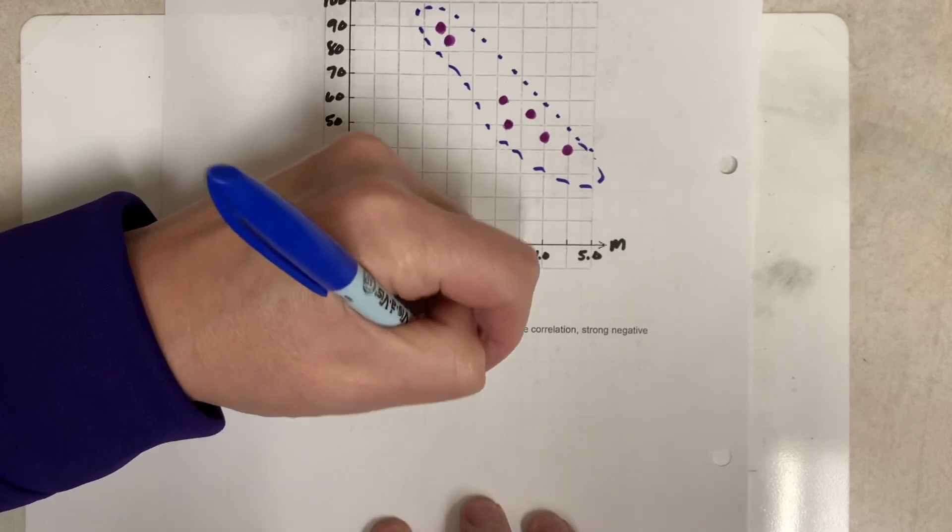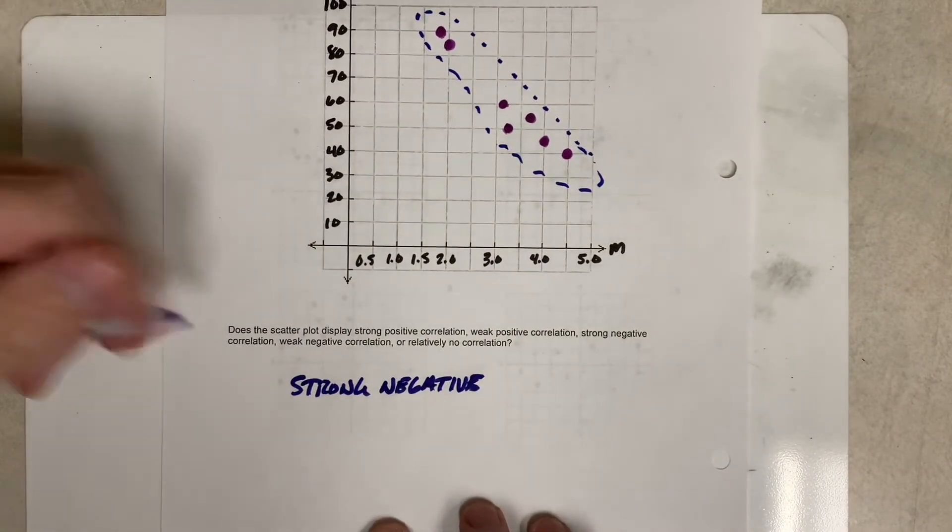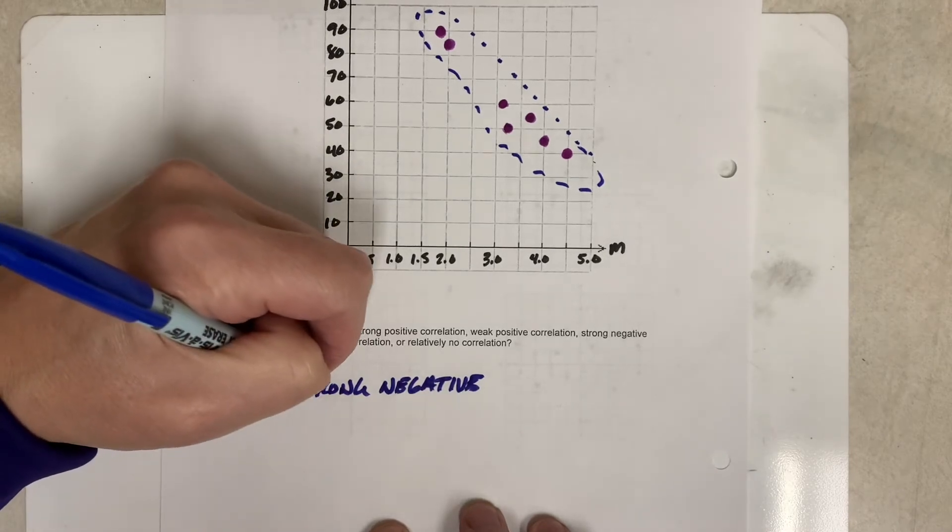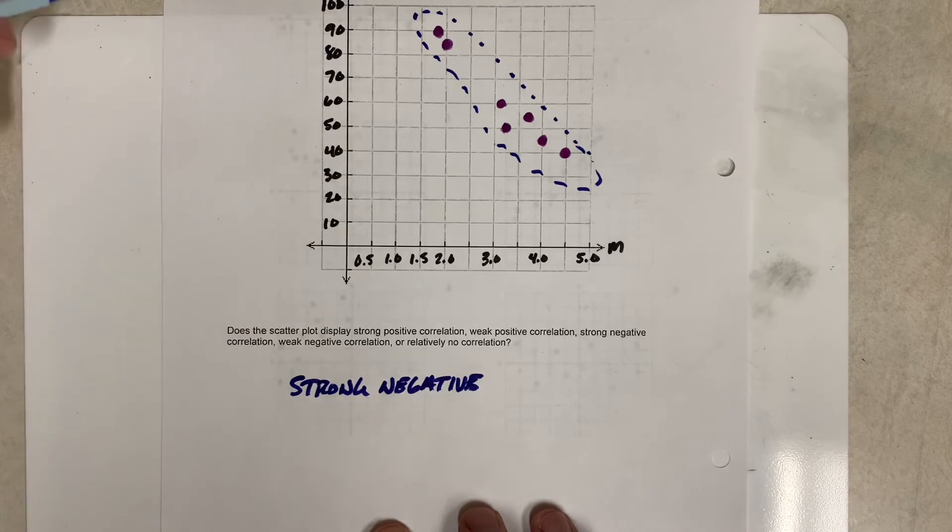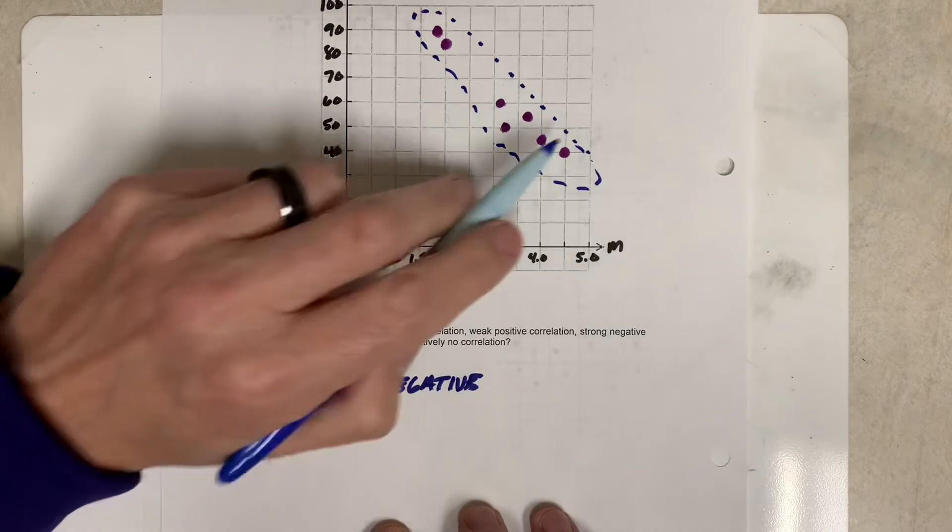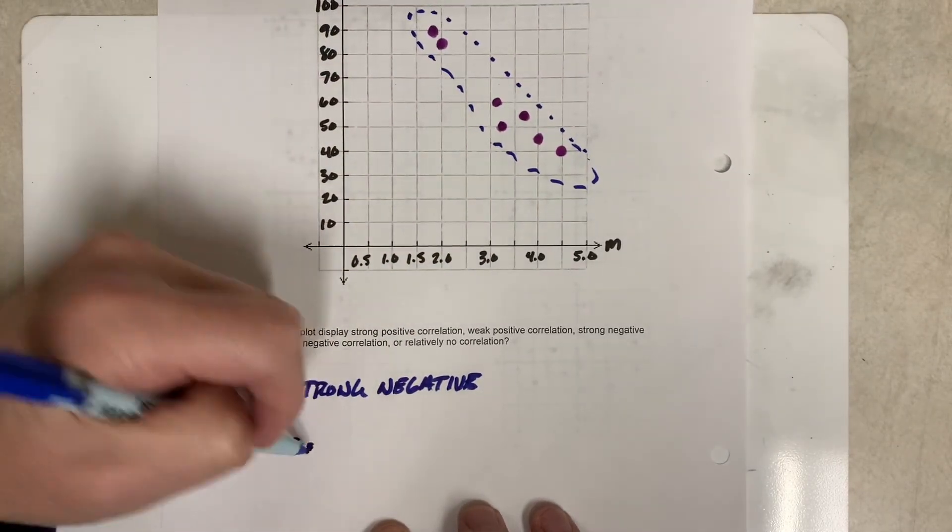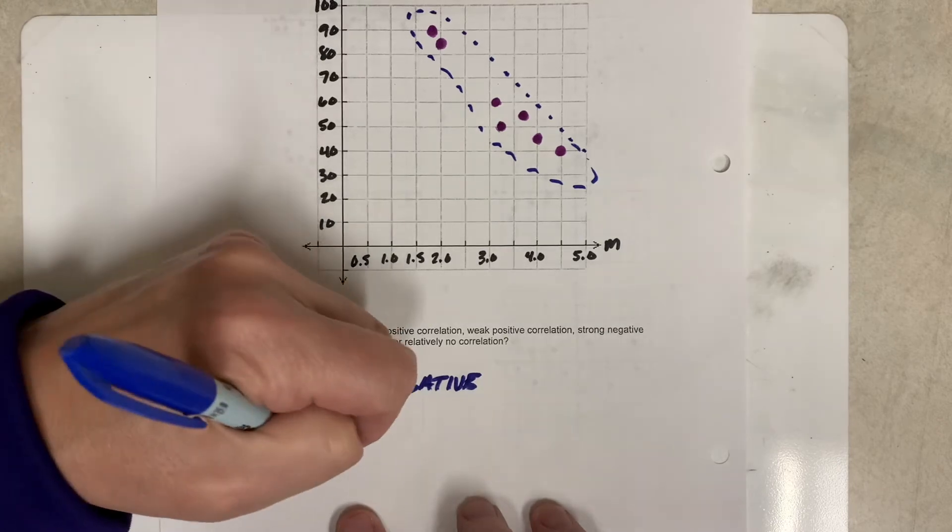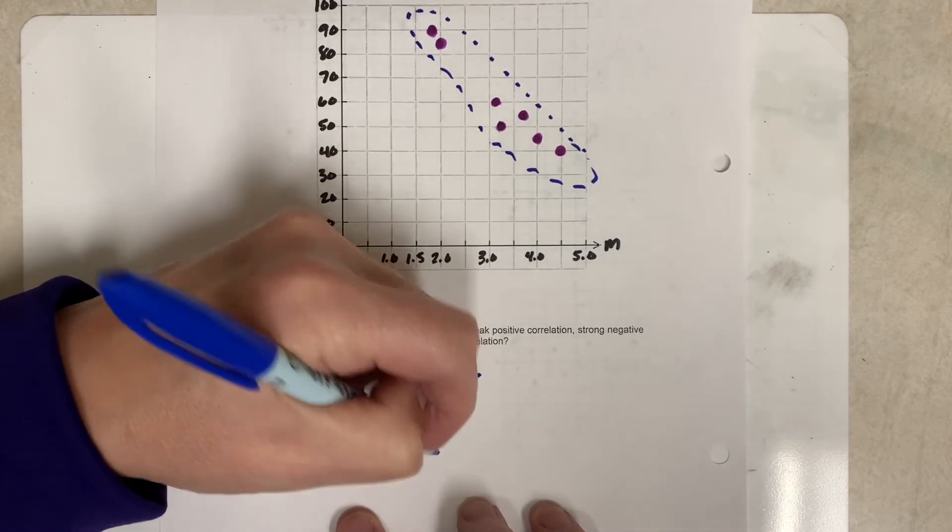Okay, so how do I know it's strong negative but without just looking at it? Well, sooner or later, you guys are going to do things like lines of best fit using technology. If you look at technology, you're going to find out later that this data right here, if you put it into the computer, will have what's called an r value, which is a correlation coefficient of negative 0.9607.